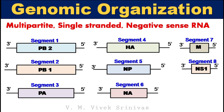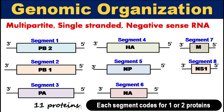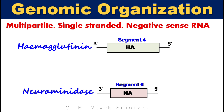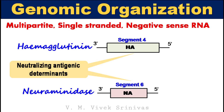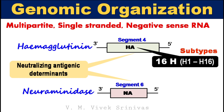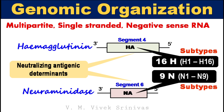These 8 segments code for 11 proteins, that is each segment codes for 1 or 2 proteins. Segment 4 and segment 6 code for hemagglutinin and neuraminidase respectively. These 2 proteins play a major role as neutralizing antigenic determinants. Within hemagglutinin there are 16 subtypes named H1 to H16, and within neuraminidase there are 9 subtypes named N1 to N9.